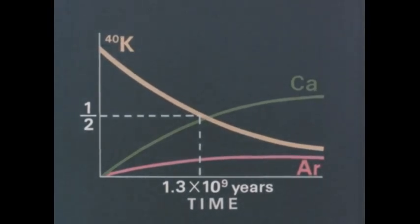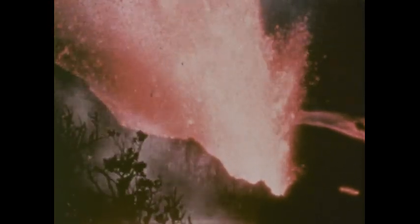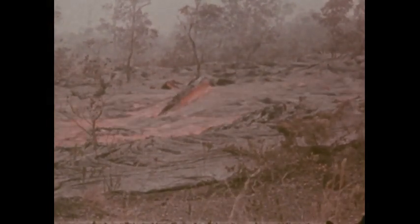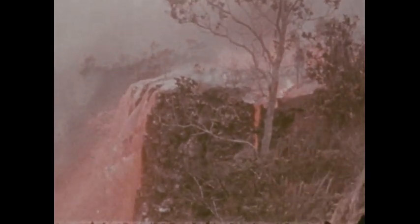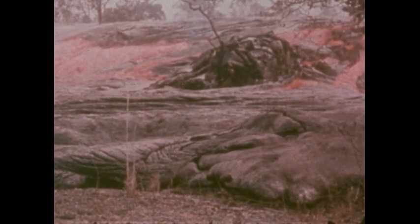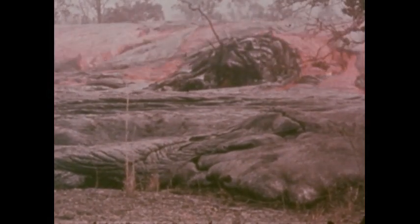Potassium-40 is very common in igneous rock. Using what is called the potassium-argon dating method, we can find out, for instance, how long ago a volcanic eruption took place. Hot molten lava contains potassium-40, but no argon-40 at all. The lava's radioactive clock will start when it cools and hardens into solid rock. Then the rock's potassium-40 content will begin to drop, and its argon-40 increase at a known rate.